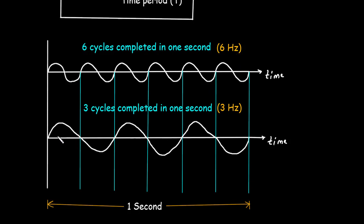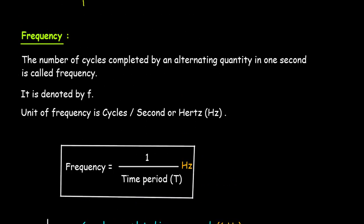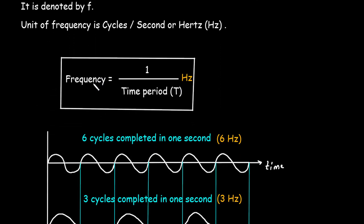For the second waveform, counting 1, 2, 3 — only 3 cycles are completed in 1 second, so the frequency is 3 Hz. Frequency is denoted by small f. The unit of frequency is cycles per second or Hz. The formula for frequency is: frequency equals 1 upon time period, and its unit is Hz.